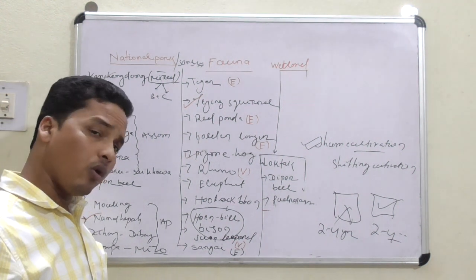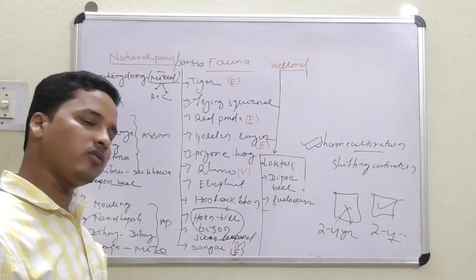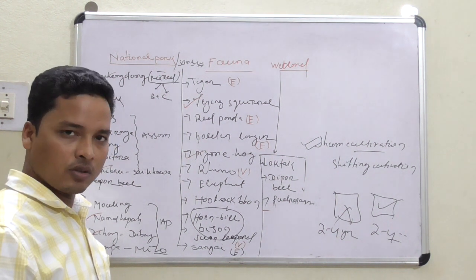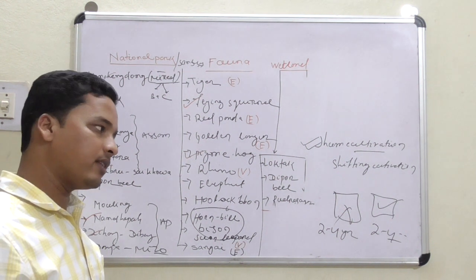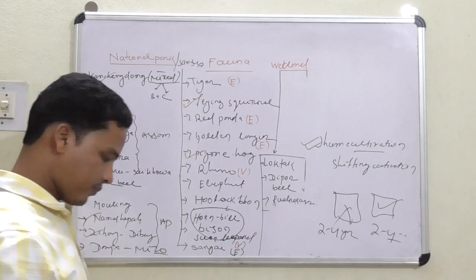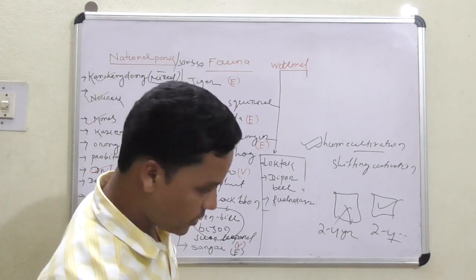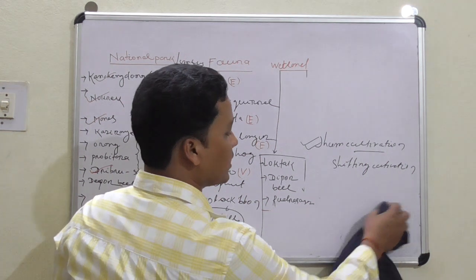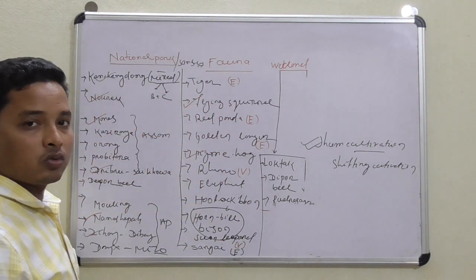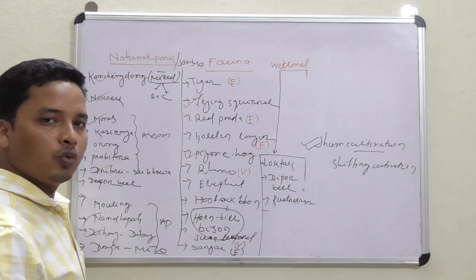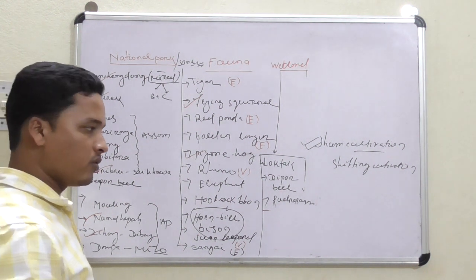Until and unless the fertility of the soil is maintained, they will utilize the soil in that particular region, then again they will shift to the next region. This is the shifting cultivation, which is known as Jhum cultivation in the northeastern part of India. Jhum cultivation is usually done in the mountain region.